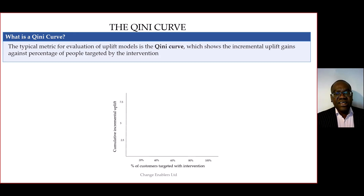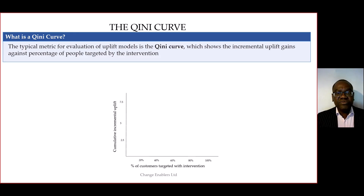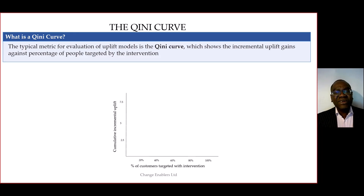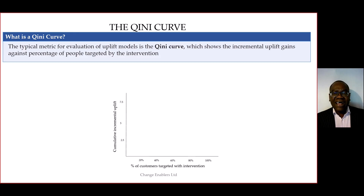We then take each customer in a dataset and predict their uplift based on their conditional average treatment effect — which was explained in greater detail in the previous post. We order the cumulative gain from largest to smallest and then plot it. To make sense of the shape of the curve, it's useful to understand that each customer falls into one of four quadrants based on their response to our intervention.